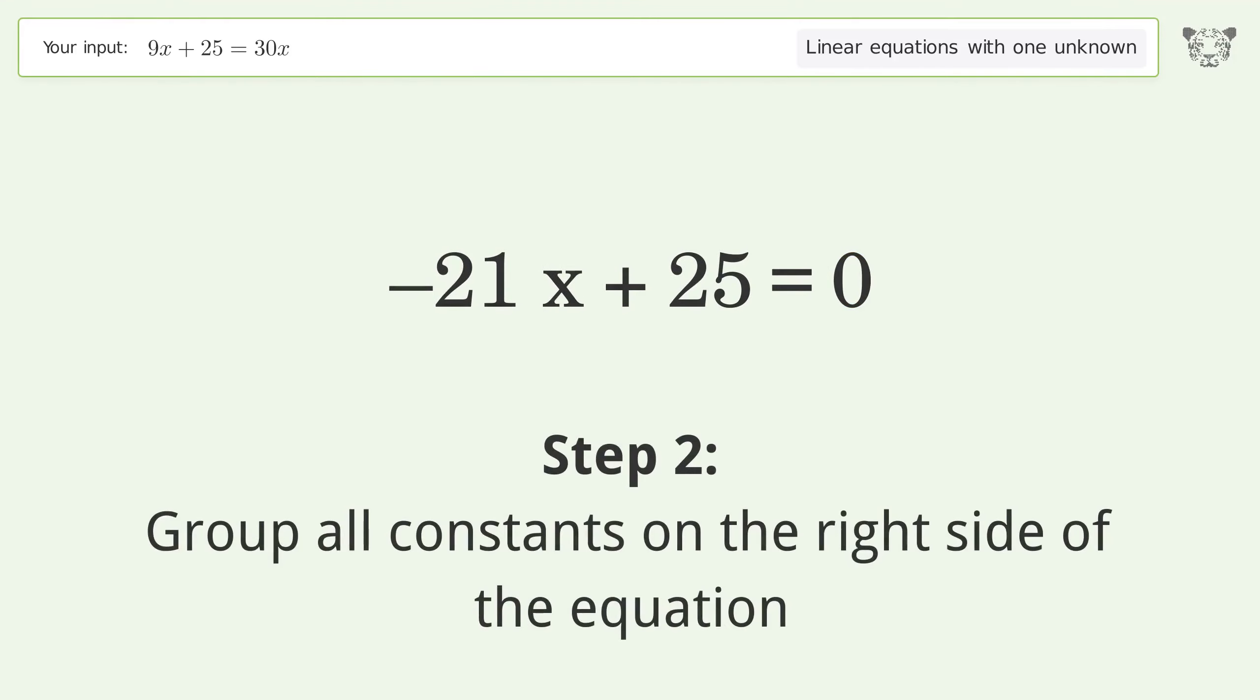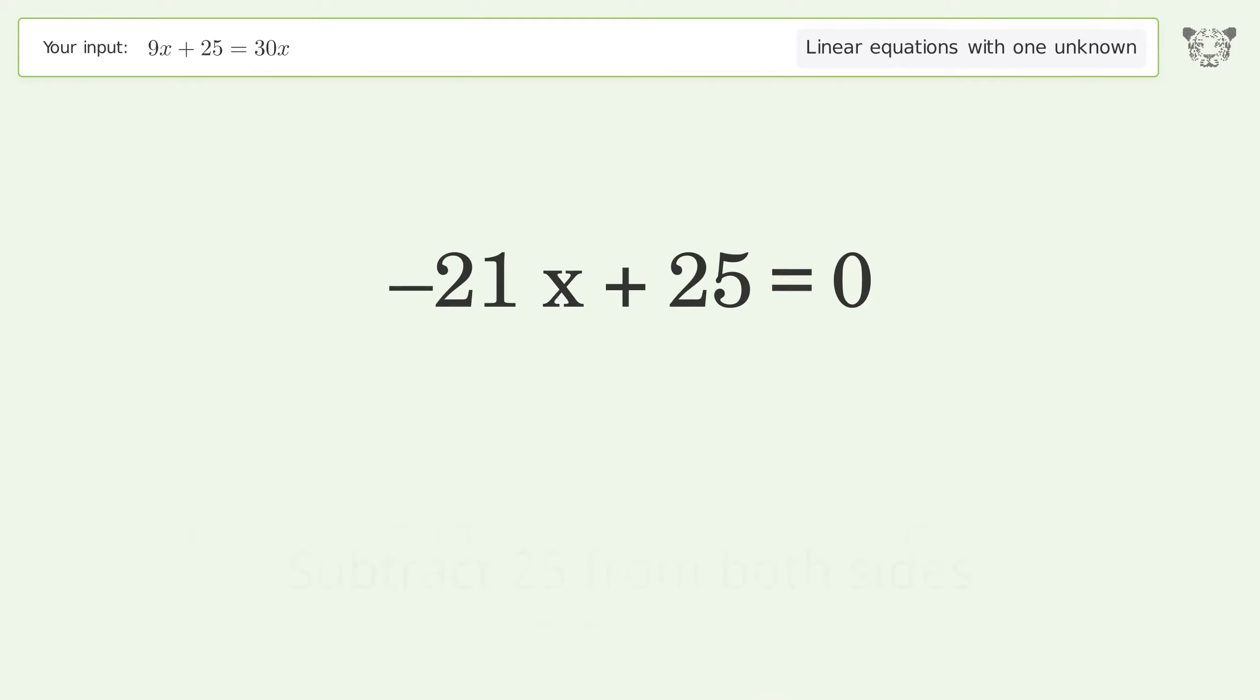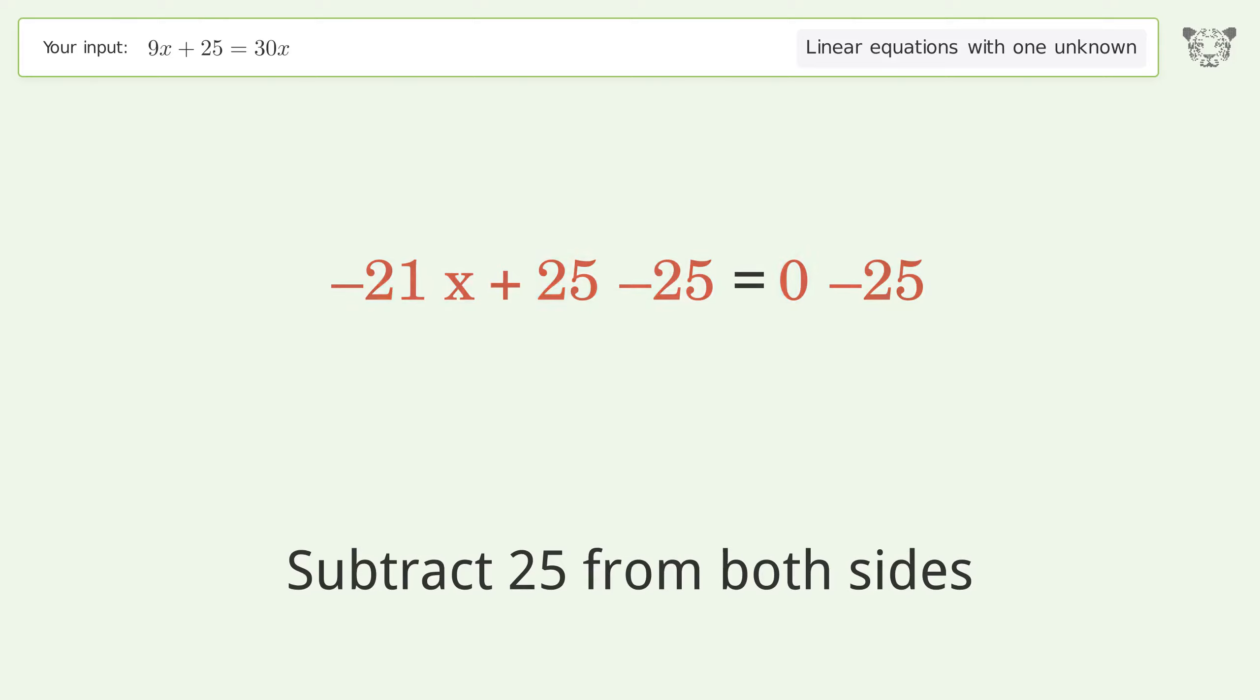Group all constants on the right side of the equation. Subtract 25 from both sides. Simplify the arithmetic.